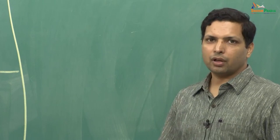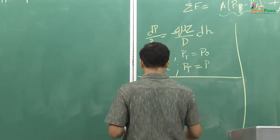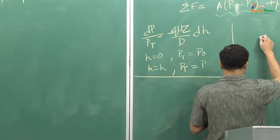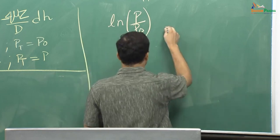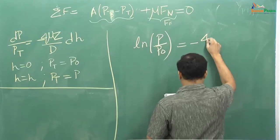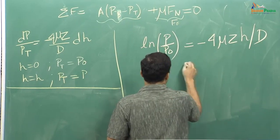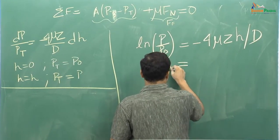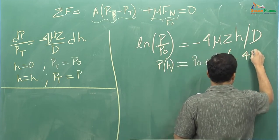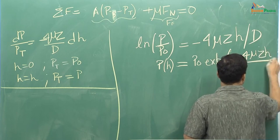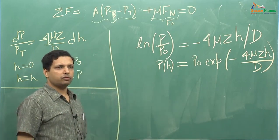We will continue with this. I hope you tried to solve this equation — it is not very difficult, it is just a simple log equation. What you will get should be like this. I had already given the limits and therefore, from those limits you should get: P as a function of H is equal to P naught EXP. So, this is the form of the pressure as a function of height H.